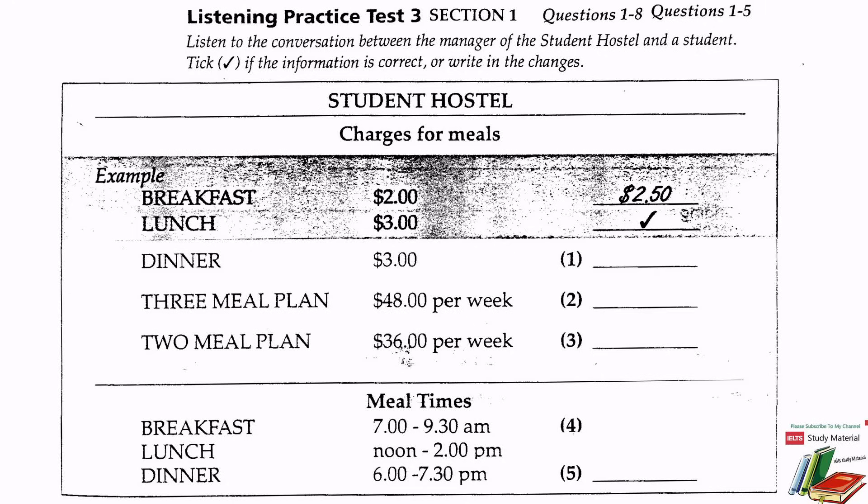Excuse me, I want to ask you about the charges for meals. Are they the same as they were last year? No, I'm afraid they're not. We've managed to keep most of them the same but we've had to increase the charge for breakfast. How much is it now? It's two dollars fifty, it used to be two dollars. What about lunch? It's unchanged, still three dollars. Does dinner still cost three dollars? Yes it does, we've managed to keep the prices down this year.